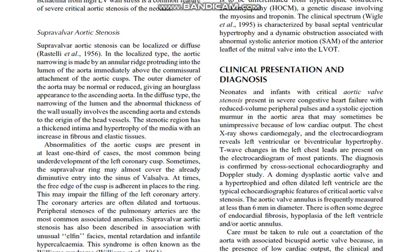In the diffuse type, the narrowing of the lumen and the abnormal thickness of the wall usually involves the ascending aorta and extends to the origin of the head vessels. The stenotic region has a second intima and hypertrophy of the media, with an increase in fibrous and elastic tissues.